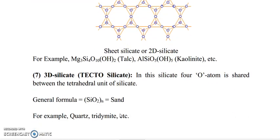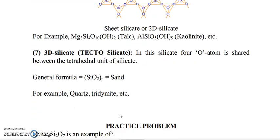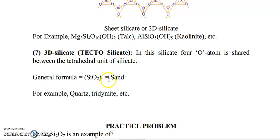Next type is 3D silicate, also known as tectosilicate. In this silicate, all 4 oxygen atoms are shared between the tetrahedral silicate units. The general formula for 3D silicate is SiO₂ N, also known as silica or sand. Examples include quartz, tridymite, and so on.